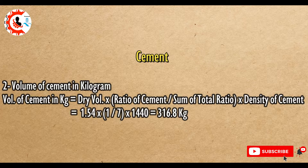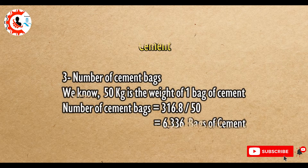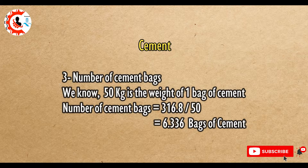Volume of cement in kilogram equals dry volume multiplied by ratio of cement divided by sum of total ratio, multiplied by density of cement. 1.54 × (1/7) × 1440 equals 316.8 kg. Number of cement bags: we know 50 kg is the weight of one bag of cement. Number of cement bags equals 316.8 divided by 50 equals 6.336 bags.